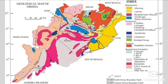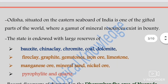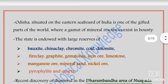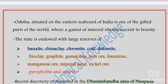This map is very important but our main discussion is the mineralogy and geology of Odisha. We will discuss the map in detail when we talk about the Singhbhum Craton — more than 80 percent of which lies in the state of Odisha. Odisha is situated on the eastern seaboard of India and is one of the gifted parts of the world where a gamut of mineral resources exist in bounty.